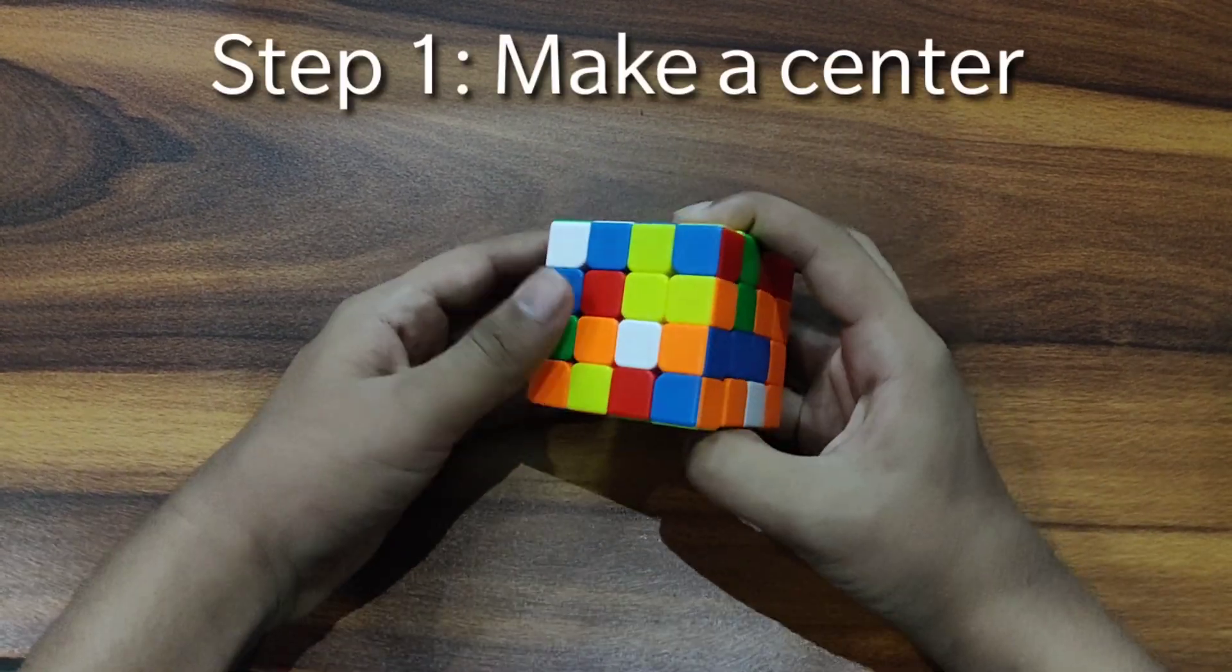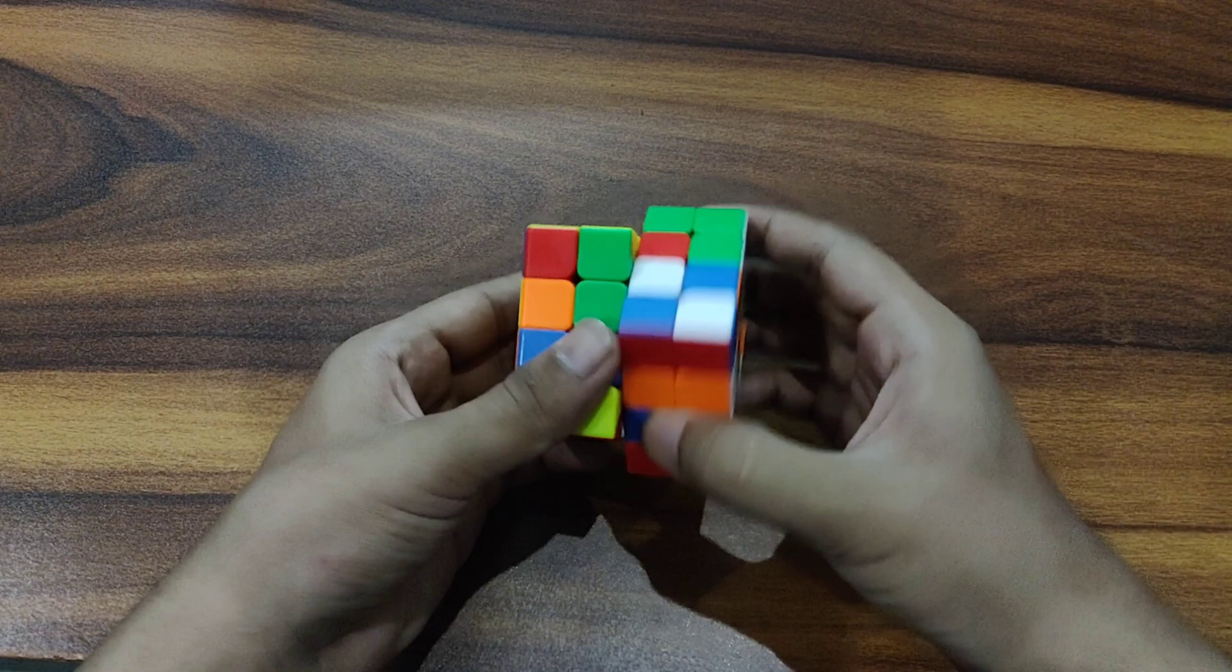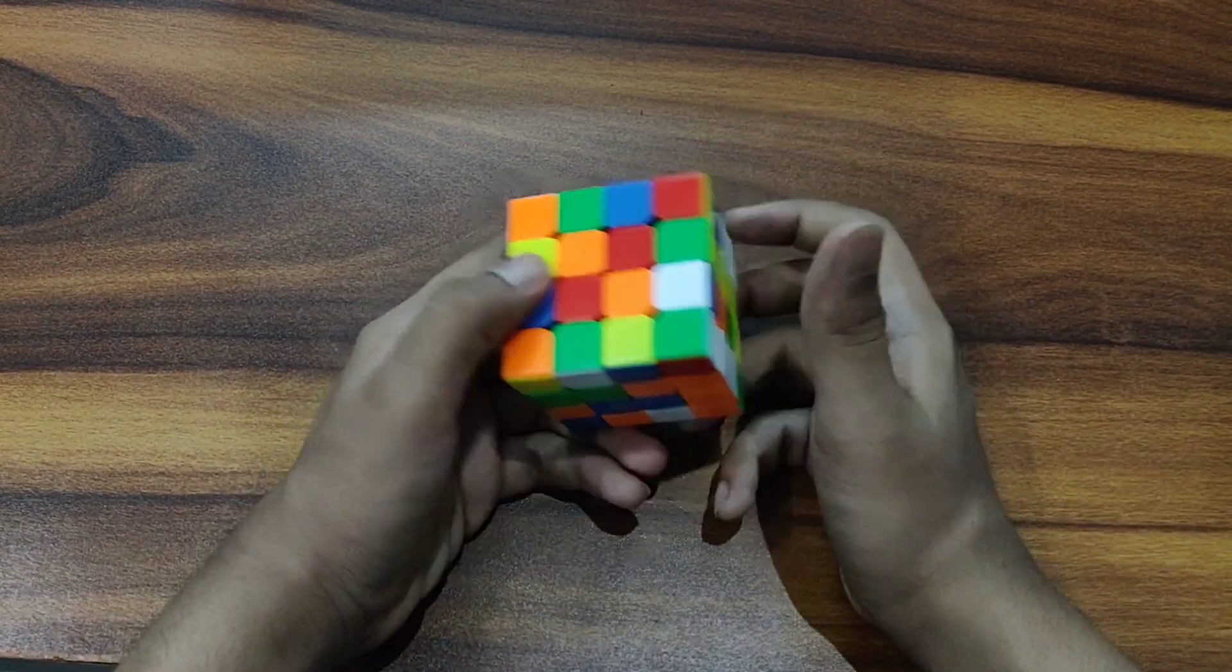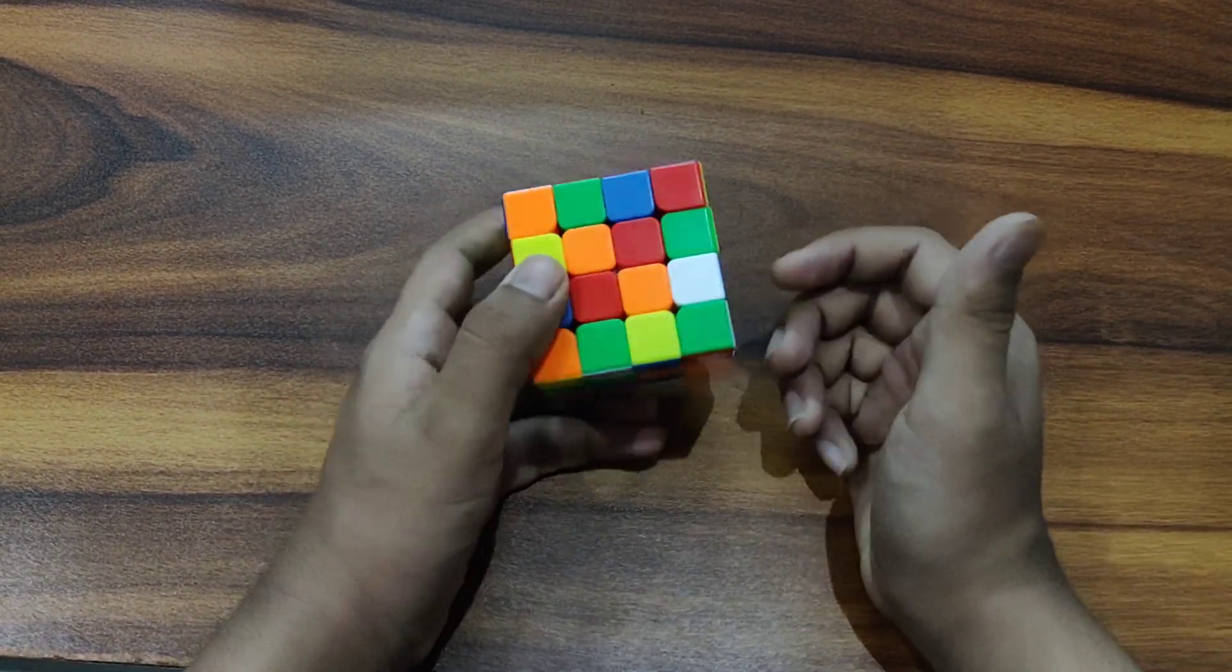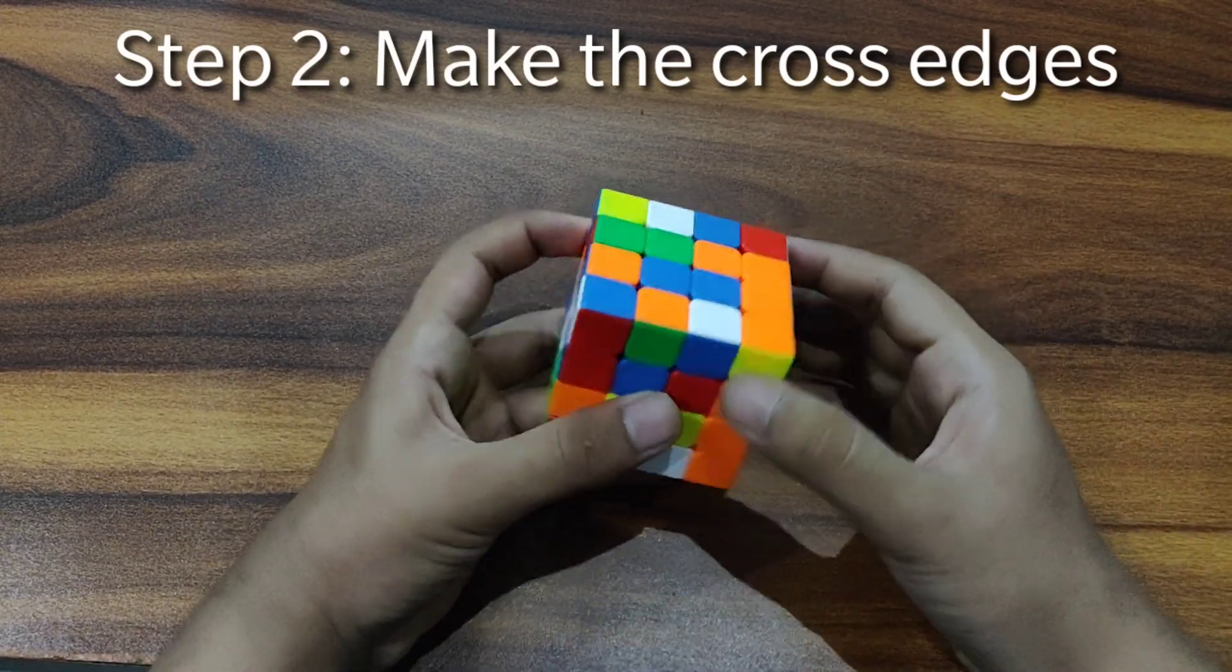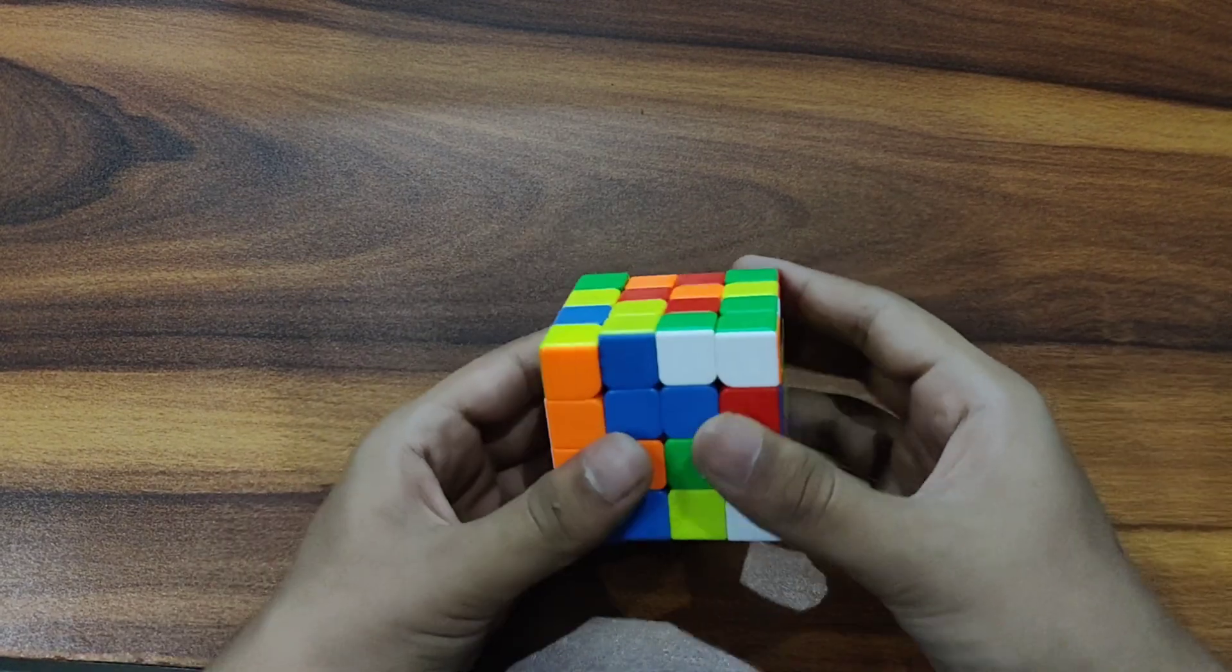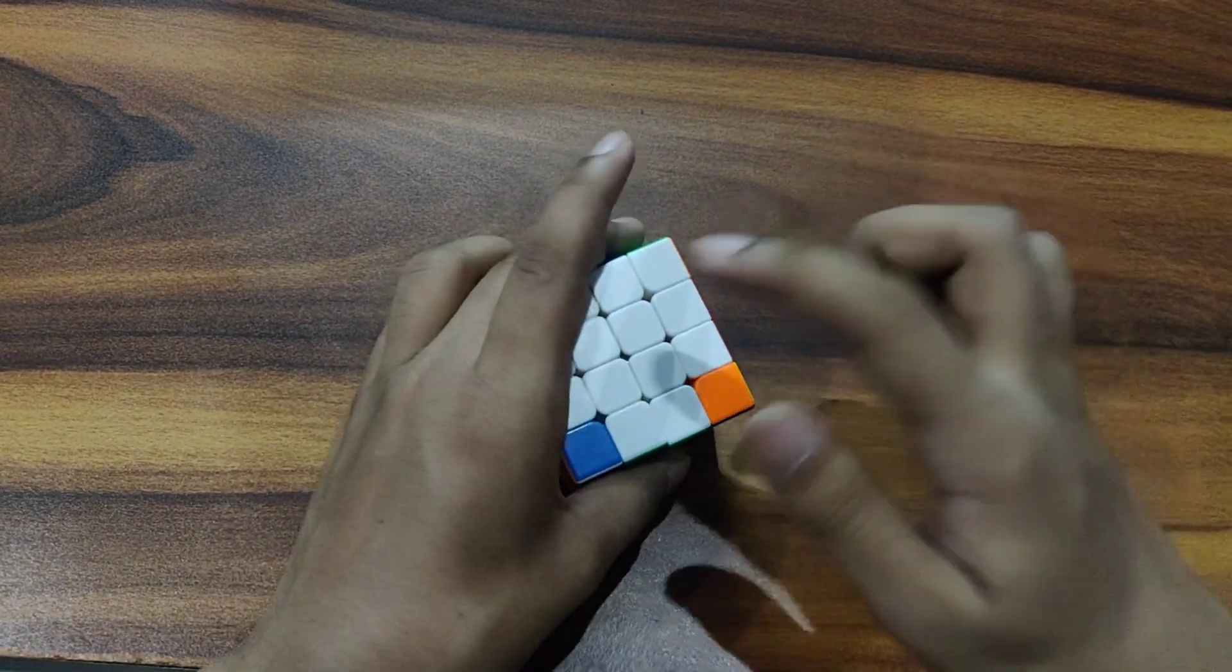So the first step of solving the cube LBL is to make a center like normal stuff. The first center, and after you have done that we don't have to make the opposite center because it's like the last layer. So now we have to make the 4 cross edges. Got one made up. So you can do it same as your method. Done.